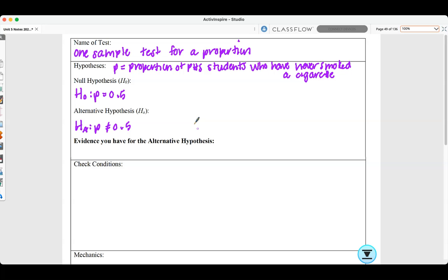In our evidence for our null hypothesis, P hat would be 72 over 120, which equals 0.6, which does not equal 0.5.